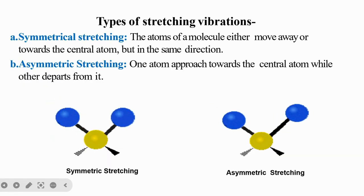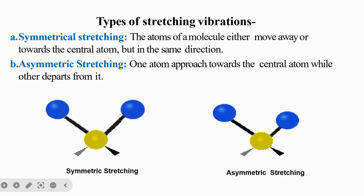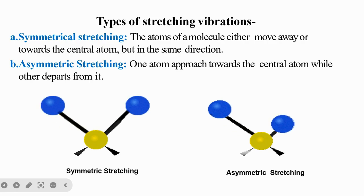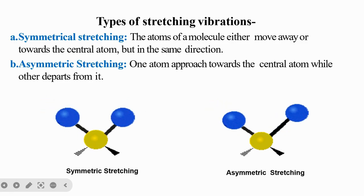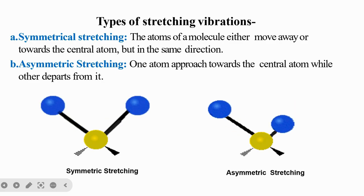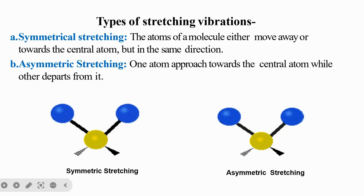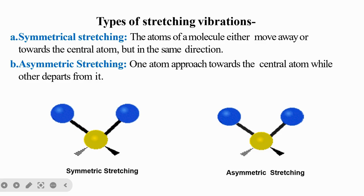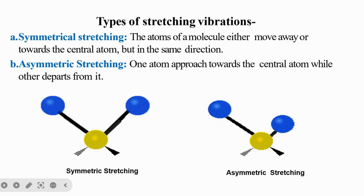Stretching vibration is of two types: symmetric stretching and asymmetric stretching. In symmetric stretching, the atoms of a molecule either move away from or towards the central atom, but in the same direction simultaneously. In asymmetric stretching, one atom approaches the central atom while the other atom moves away from the central atom.